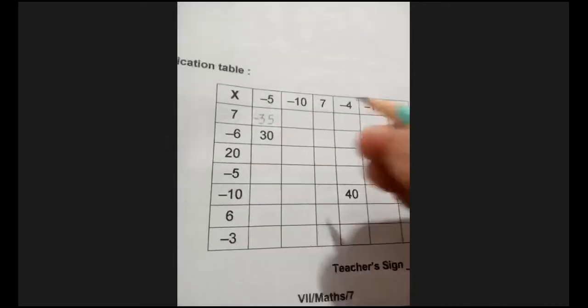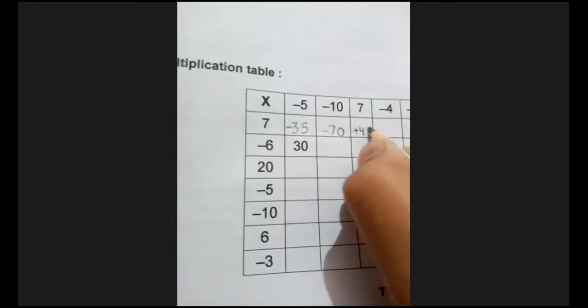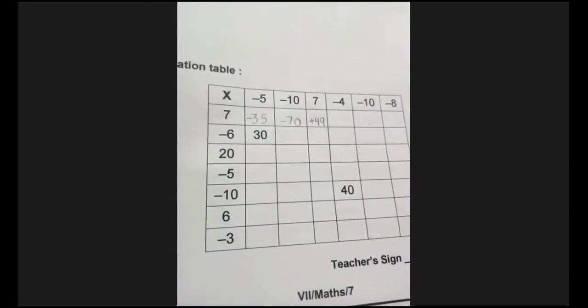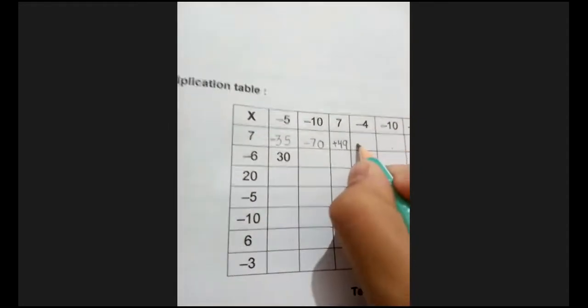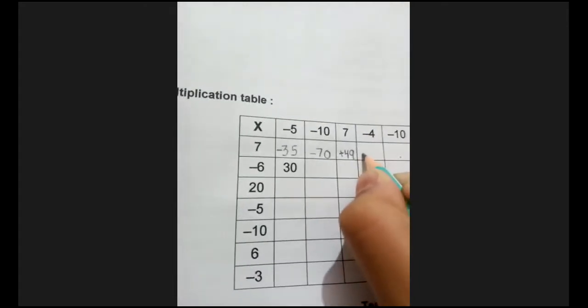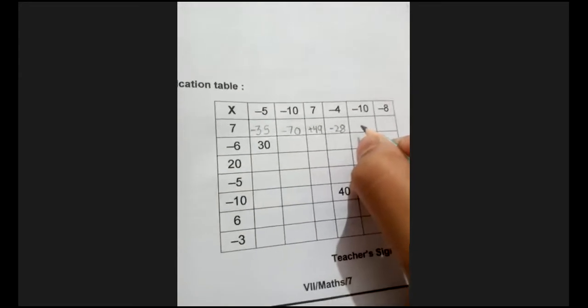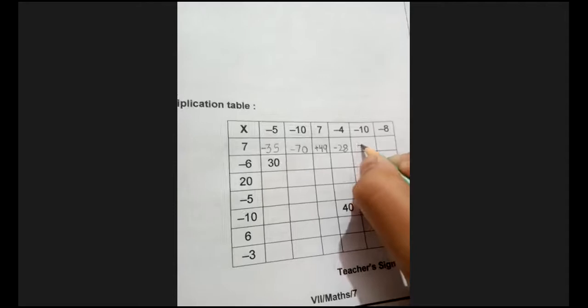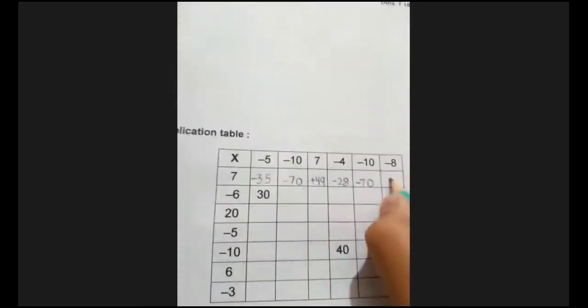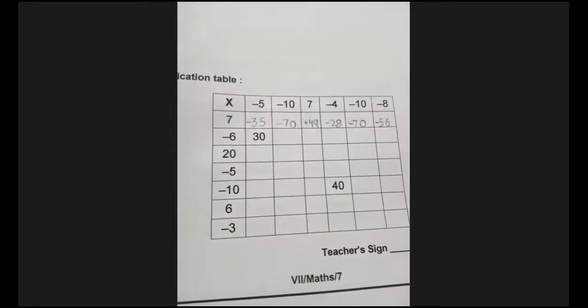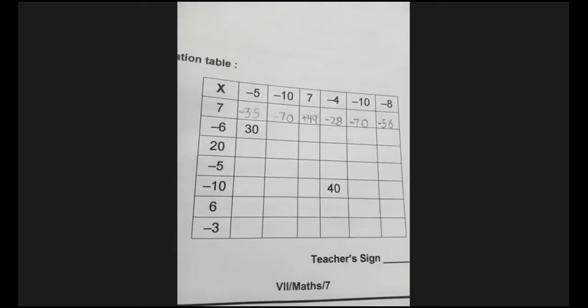Positive 49 because there is no negative sign there. Now next number, 7 into 4. 7 into 4, 28. And 28 with positive sign or negative sign? Negative. Right, it will be negative sign. Minus 28, write it down. It is very easy. And then 7 into minus 10 again. Again the same answer, minus 70. And the next, last number is 7 into minus 8. 7s are 56, minus 56 will come. Lisa is also showing, and I would request every one of you, please do this. Do this right now in your copy. Fill it.